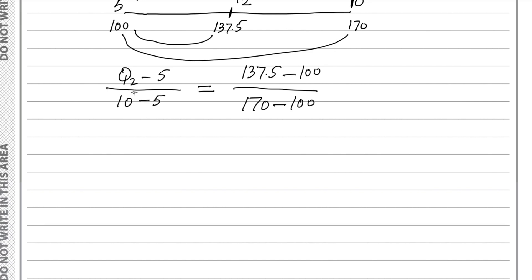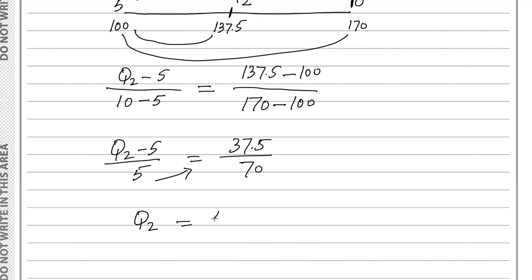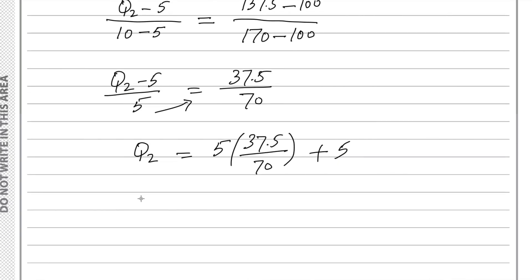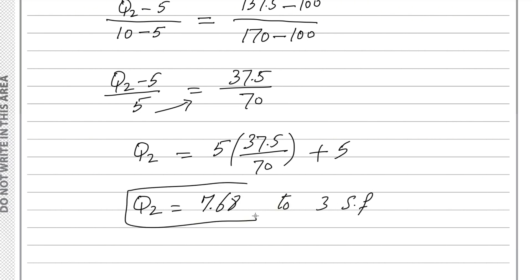The denominator on the left is 5. On the right side, 137.5 minus 100 is 37.5, divided by 70. So Q2 minus 5 over 5 equals 37.5 over 70. Multiplying across and moving the minus 5 to the right side: Q2 equals 5 multiplied by 37.5 divided by 70, plus 5. Using a calculator, this gives Q2 equals 7.68 to 3 significant figures. This is the answer for the second part — this is the median.